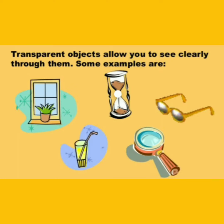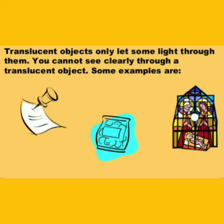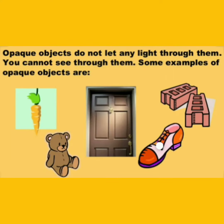Transparent objects are those objects through which we can see easily and clearly. Translucent objects are those objects through which we can see partially. And opaque objects are those objects through which we cannot see.